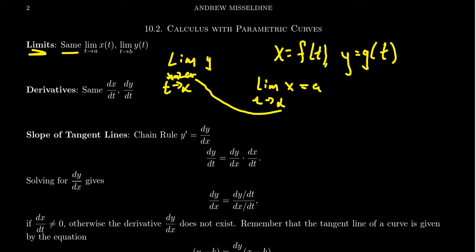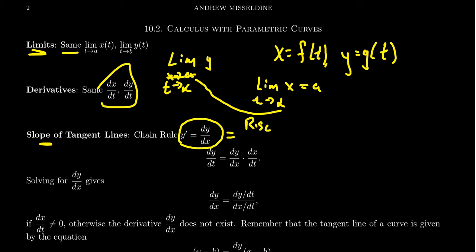Derivatives are going to be the same basic idea. We can calculate the derivative of x with respect to t and the derivative of y with respect to t using the usual derivative rules. The issue that gets a little tricky is when we look at slopes of tangent lines. What if we want to compute y prime — by which we really mean dy over dx, the derivative of y with respect to x? Because if we want the slope of tangent lines, we need rise over run, which is dy over dx. Using the chain rule, we can accomplish this.